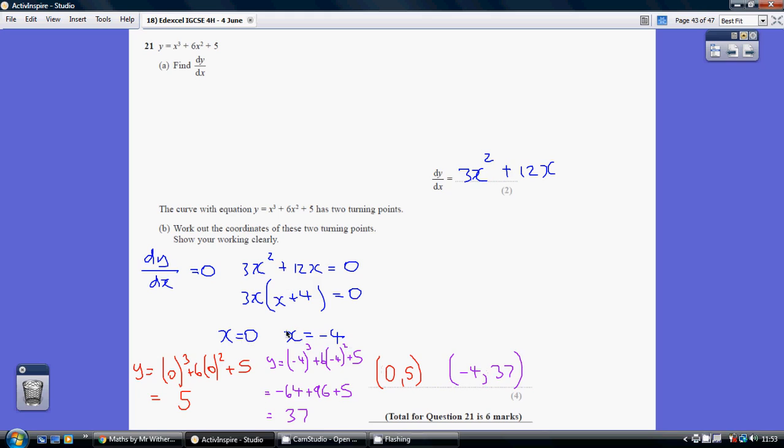Now, to work out the y values, we've got to substitute these x values not into the differential, but back into the original curve. So 0 cubed plus 6 lots of 0 squared plus 5 is 5, giving us 0, 5.